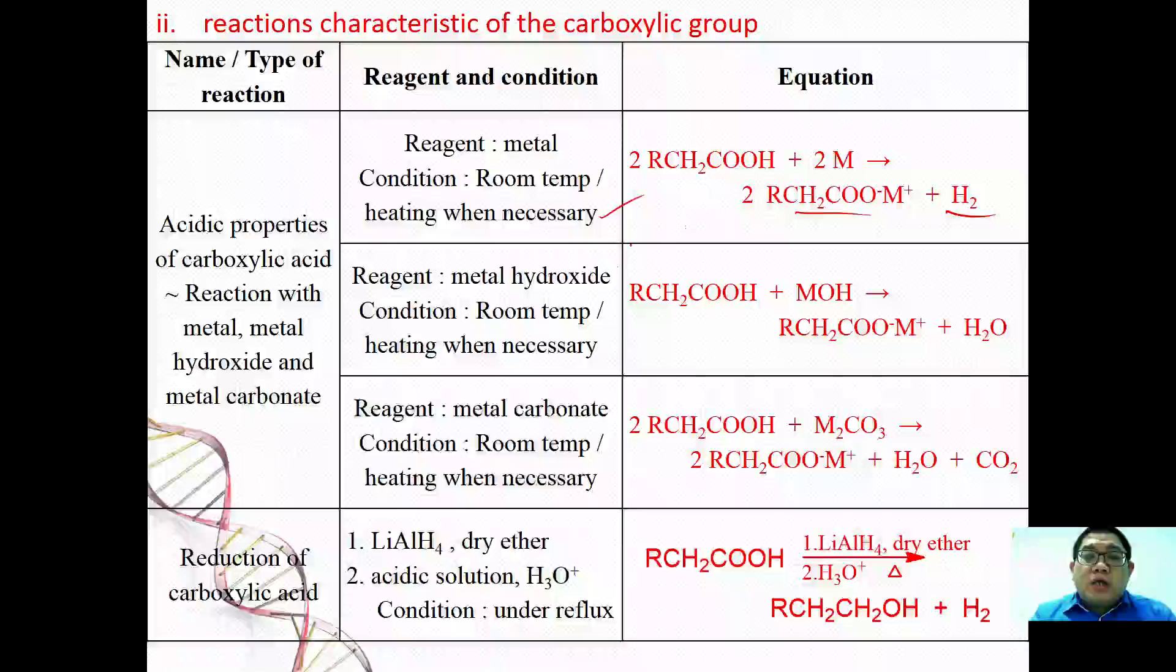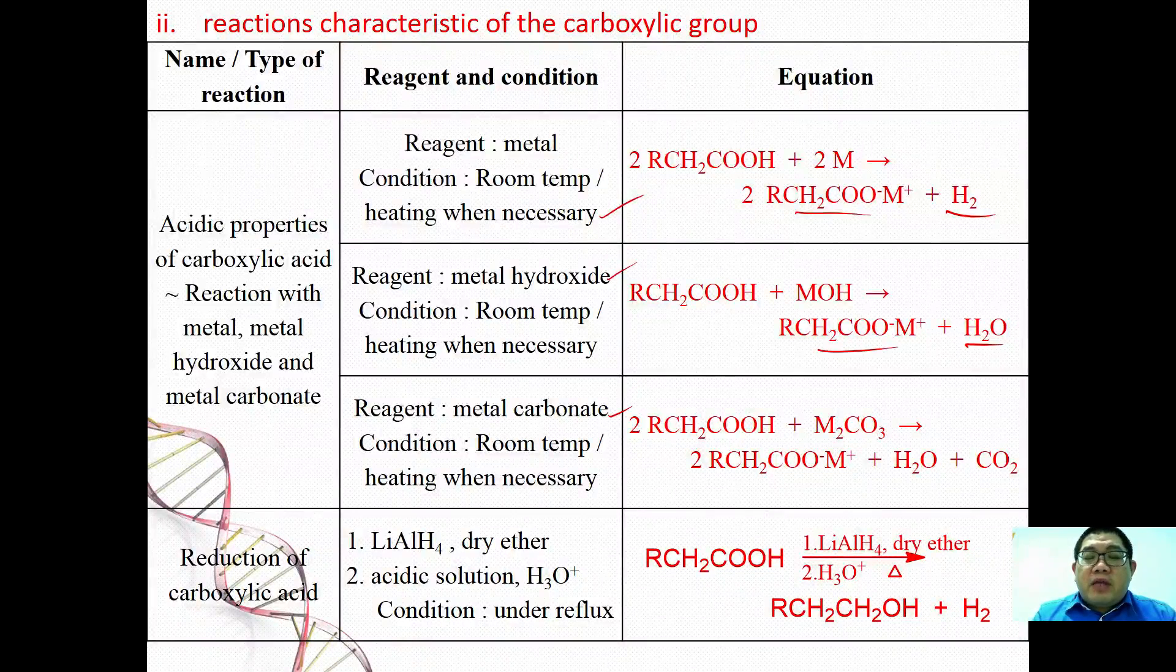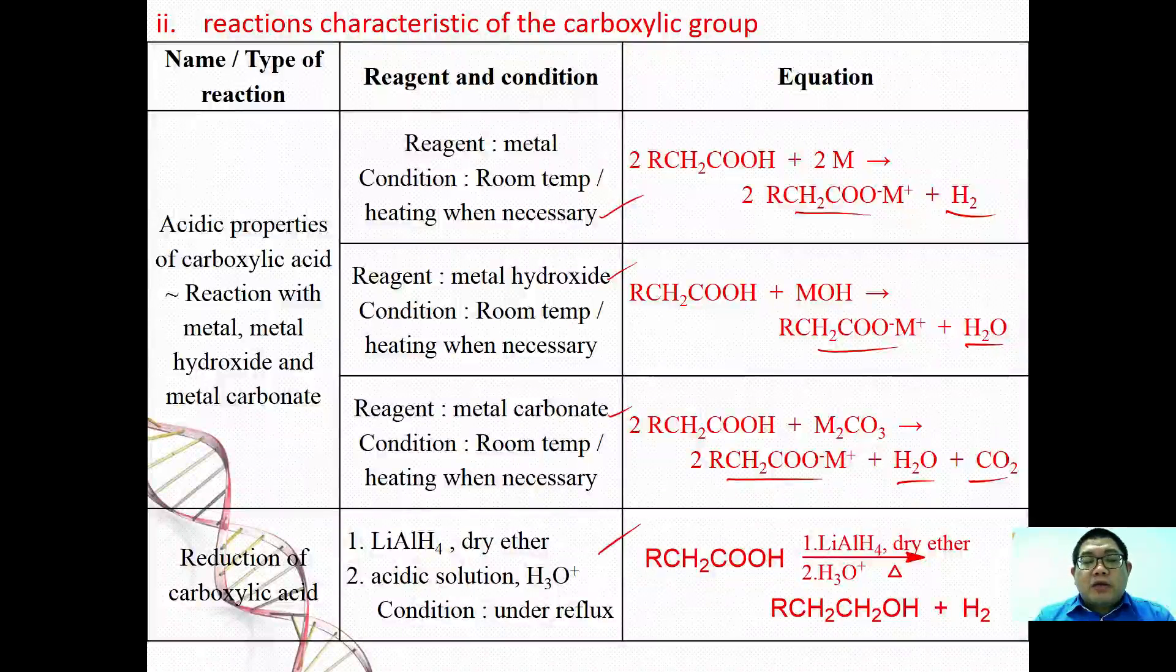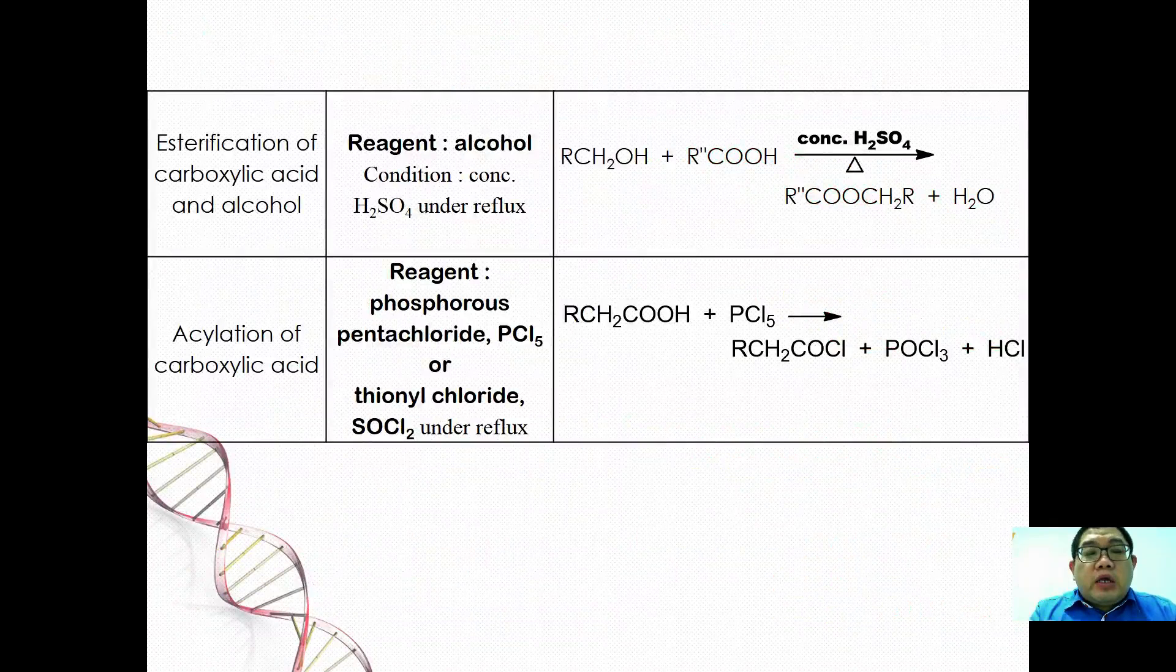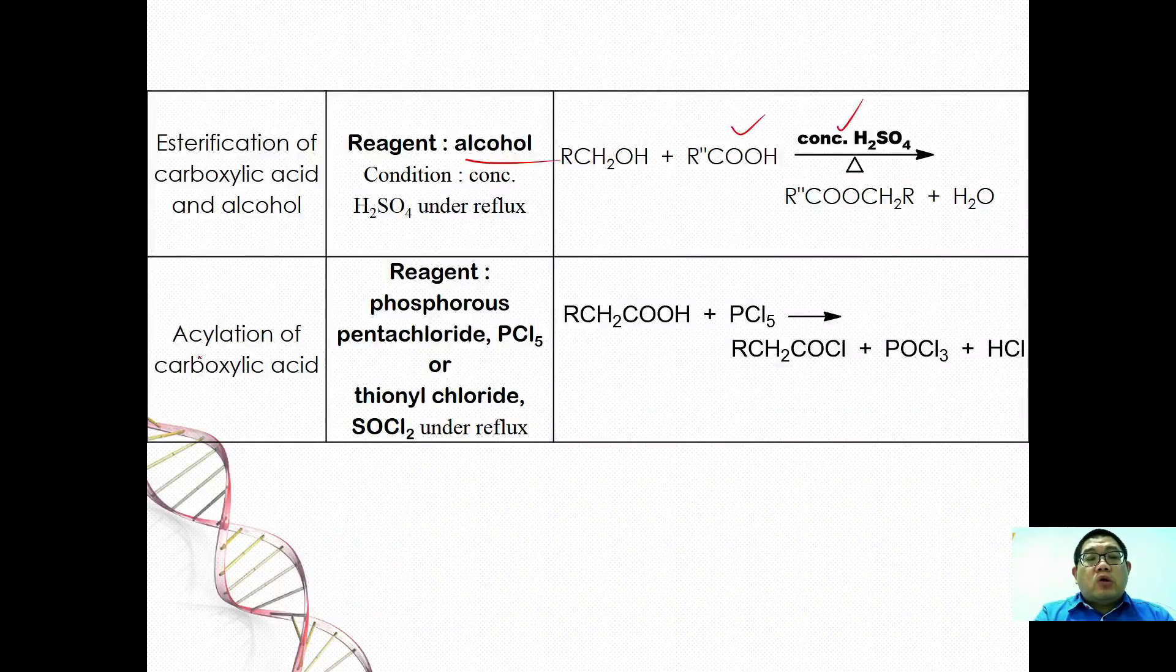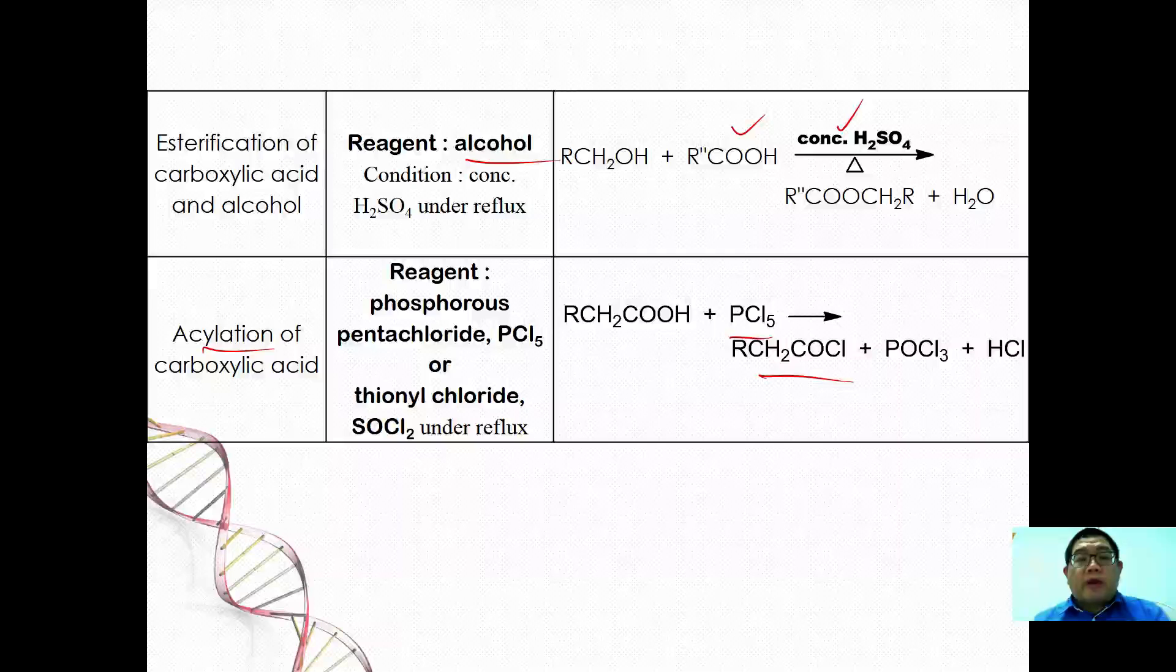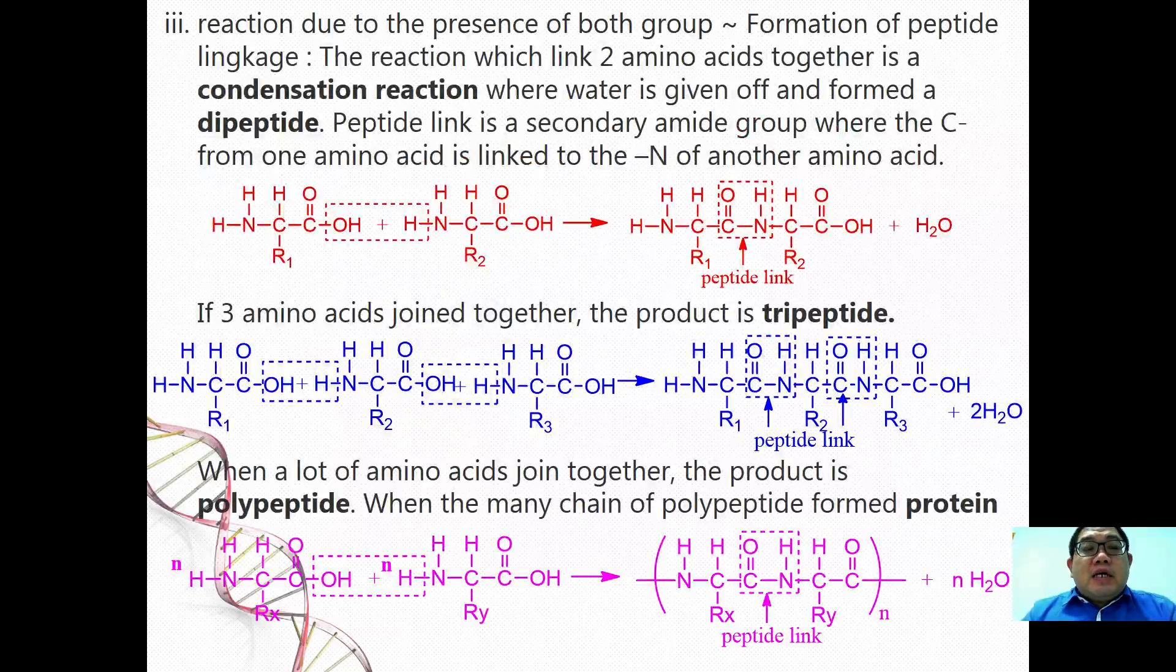Since it contains a COOH, which is carboxyl group, they have all the acidic properties, which include react with metal to form salt plus hydrogen, react with metal hydroxide to form salt plus water, react with metal carbonate to form salt plus water plus carbon dioxide. Because of this, it can also be reduced by using a strong reducing agent to form alcohol. It can also undergo esterification under acidified catalyst concentrated sulfuric acid in reflux, and it can also undergo acidulation by reacting with PCl5 to form acyl chloride.